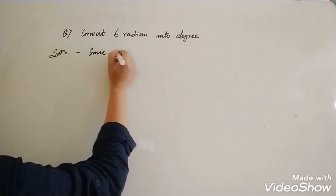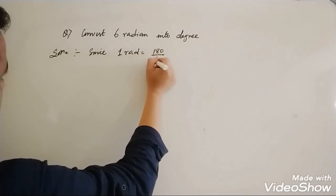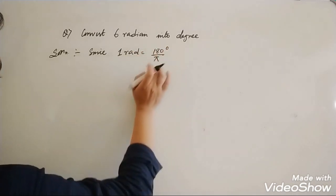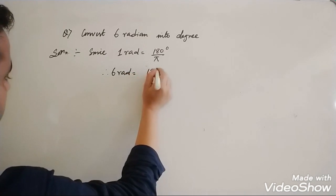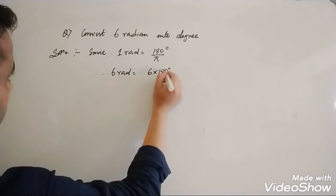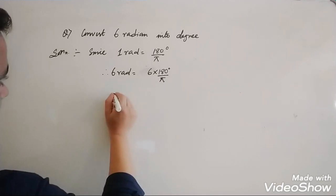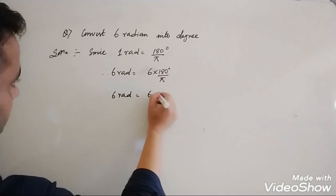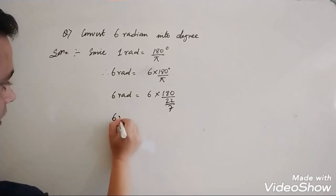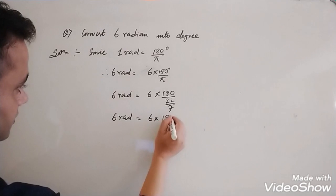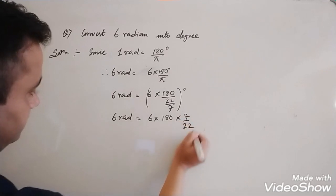You know that since 1 radian equals 180 by π degrees, so 1 radian is 180/π degrees. Therefore 6 radians equals 6 into 180 by π degrees. Now using the value of π as 22/7, this becomes 6 into 180 into 7 by 22 degrees.